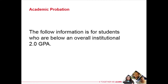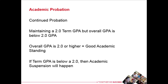The following information is for students who are below an institutional overall 2.0 GPA. If your next term GPA is 2.0 or higher but your overall is still below a 2.0 GPA, then you will be on continued probation. Students will stay on continued probation as long as they are receiving a 2.0 or higher term GPA but their overall is below a 2.0 GPA. Once the overall GPA is at a 2.0 or higher, the student will then be in good academic standing. If during continued probation a student has a term below a 2.0 GPA, then they will go to Academic Suspension.